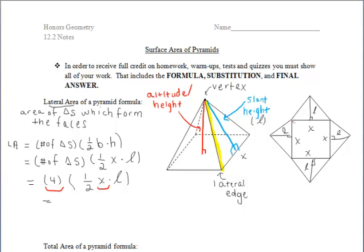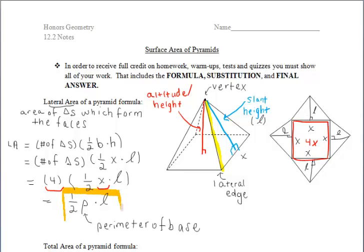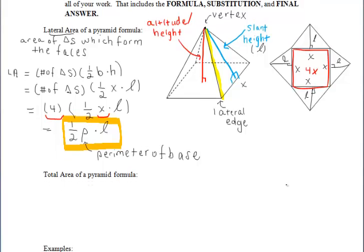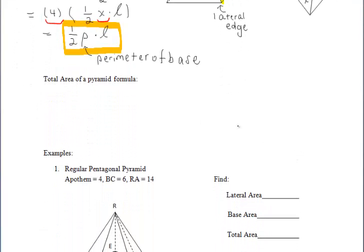What is 4X? Looking at the diagram, 4X is simply the perimeter of our base. So we can replace that with P in our formula, giving us the lateral area equals one half times the perimeter of the base times the slant height. This works every time for a regular pyramid. If the pyramid is not regular — say the base is a rectangle — we cannot use this formula.